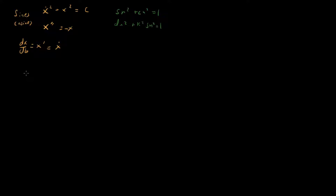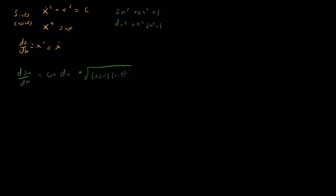The first thing I'll do is take derivatives. If we take d(sn)/du we get cn·dn, which we can express as the square root of (1 − sn²)(1 − k² sn²).